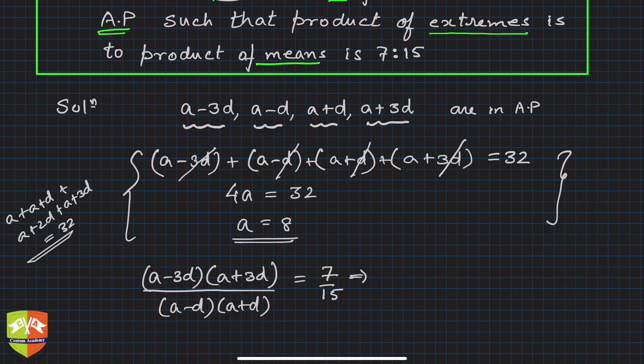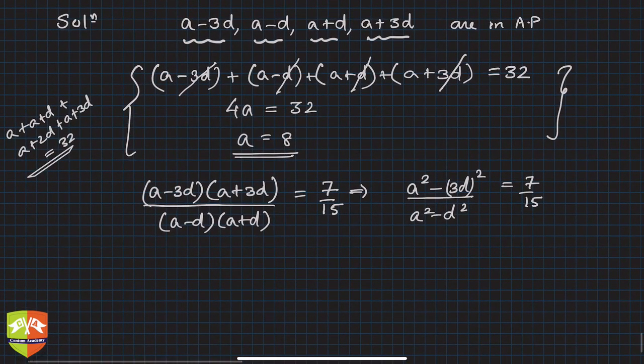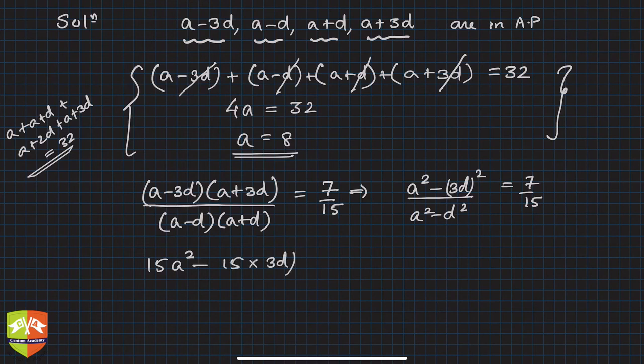Using the identity a plus b times a minus b, this is a squared minus 3d squared over a squared minus d squared equals 7 upon 15. Cross multiplying: 15 a squared minus 15 times 3d squared equals 7 a squared minus 7 times d squared. Opening brackets: 15 a squared minus 135 d squared equals 7 a squared minus 7 d squared.